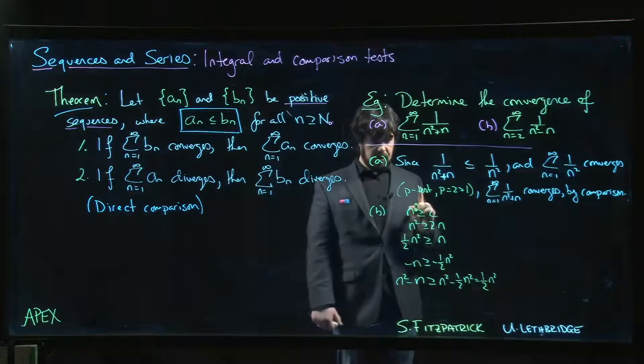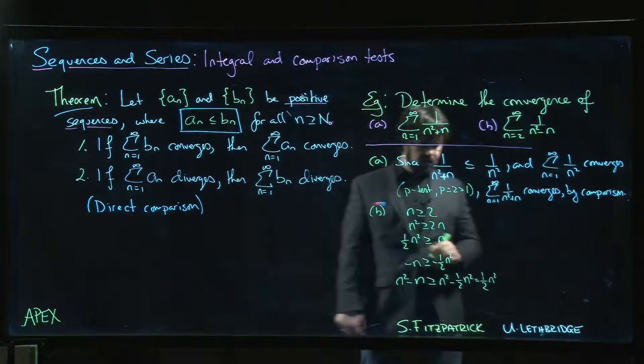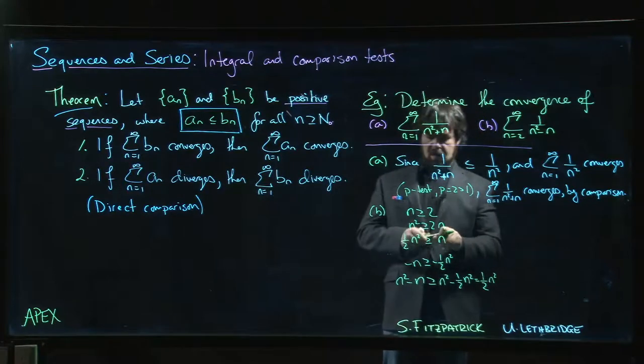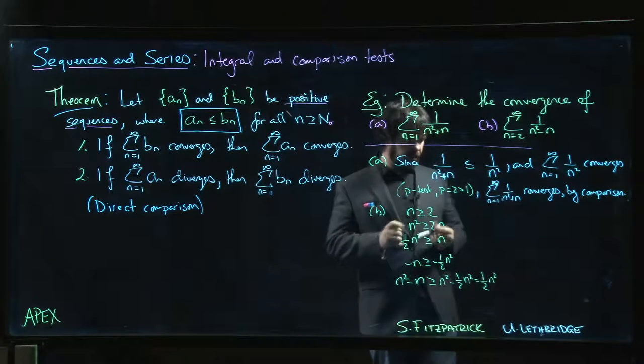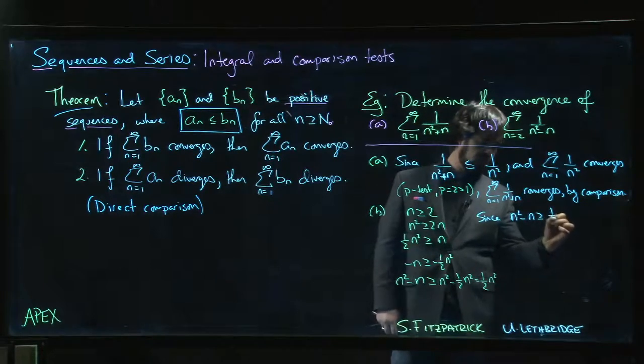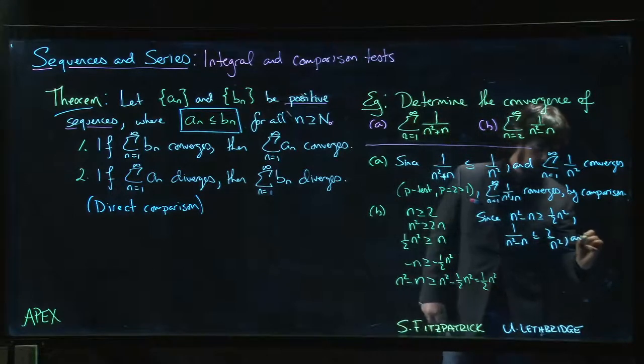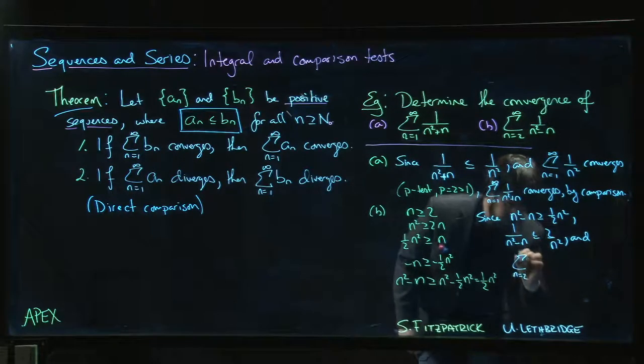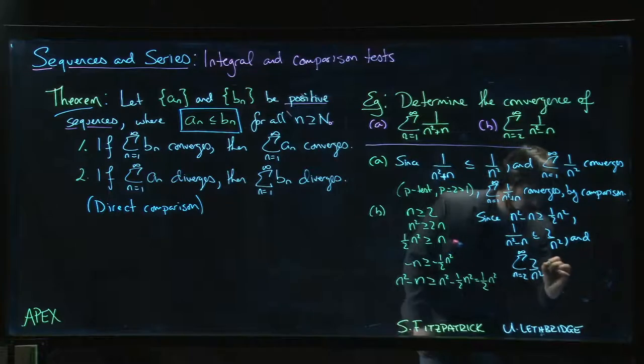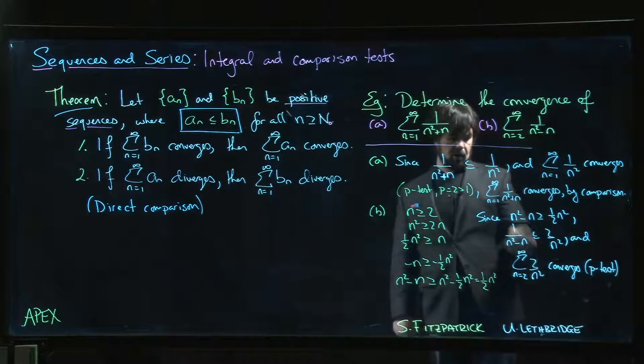I can say: since n² - n ≥ ½n², I know that 1/(n² - n) ≤ 2/n². And I know that the sum from n = 2 to infinity of 2/n² converges—again, p-test. The 2 on top is a constant, doesn't matter, factor it out, it's 1/n².